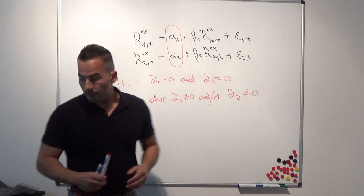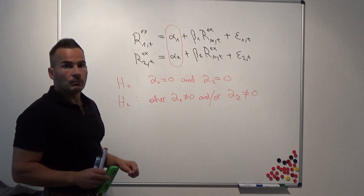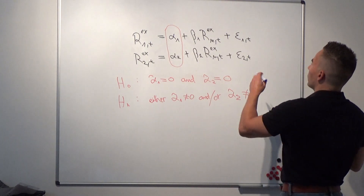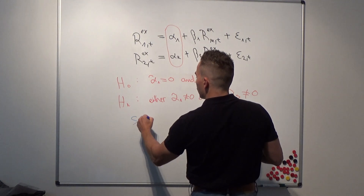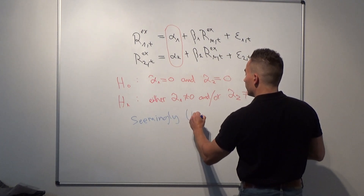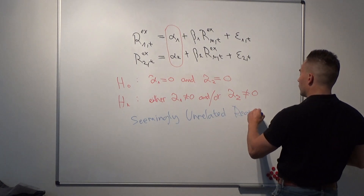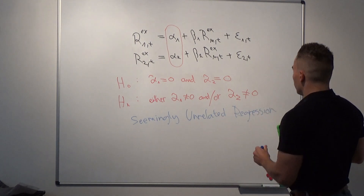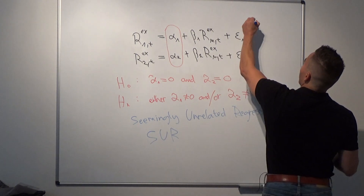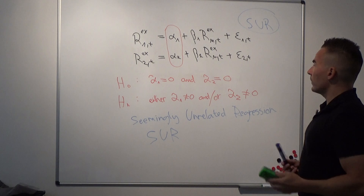We have to estimate these parameters simultaneously. The method used to estimate this model is called Seemingly Unrelated Regression, abbreviated as SUR. It is estimated using the SUR technique.